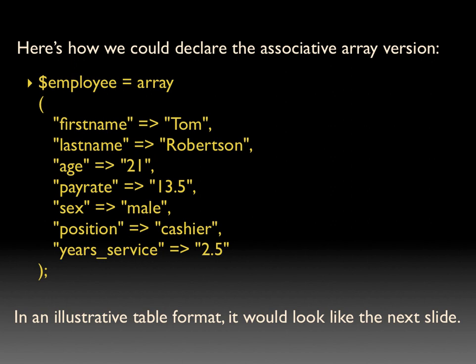Here's how we would declare the associative array version. We would still have our variable called employee and declare the array. Instead of just declaring the values, we're actually going to declare the key, and then we use this little arrow symbol — it's an equal sign and then a greater-than sign run together — and then we put the value. Each one of these sections is paired, so for instance, first name is the key that corresponds with the value of Tom, and last name is the key that corresponds with the value of Robertson. You can see how this is a lot more informative than the indexed array.